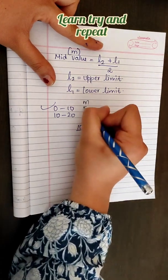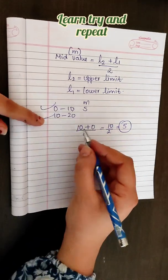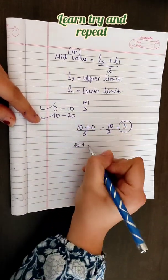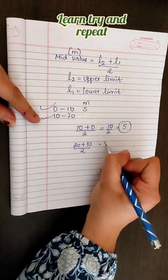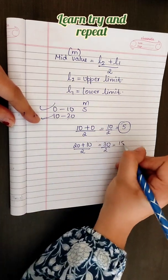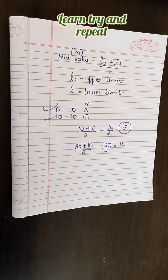For the second class interval, the upper limit is 20 and the lower limit is 10. So, 20 plus 10 divided by 2. 20 plus 10 is 30, and 30 divided by 2 is 15. So, your mid-value is 15. I hope you understand. Thank you.